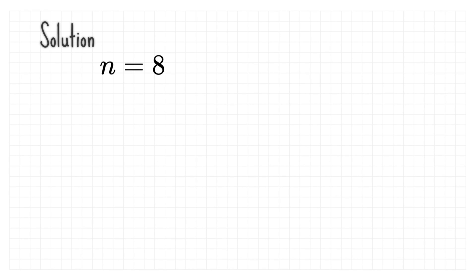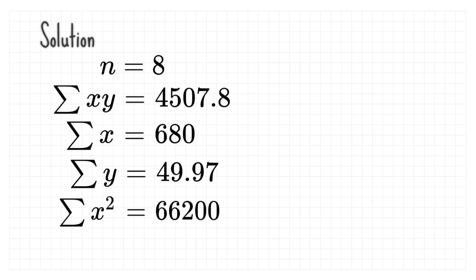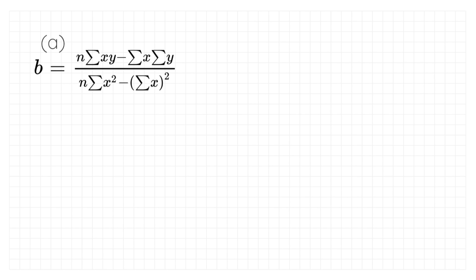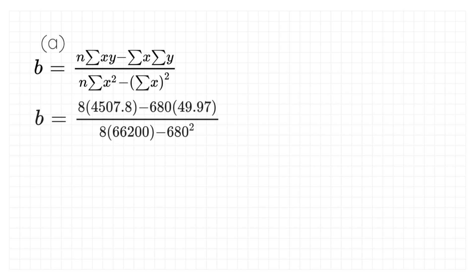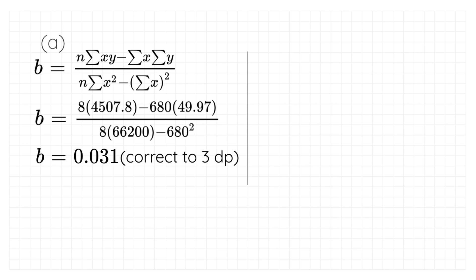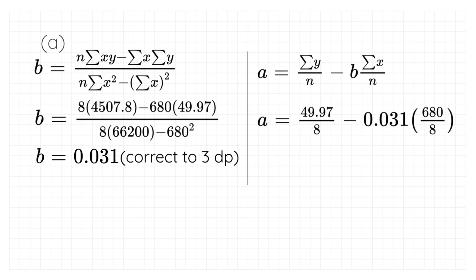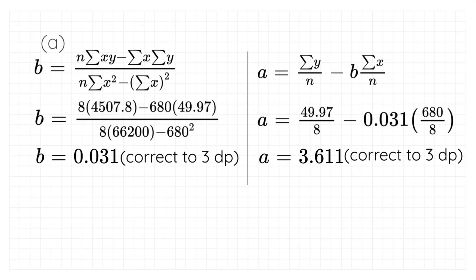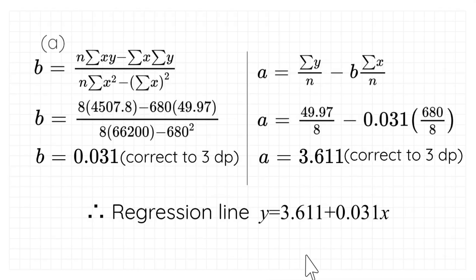Eight similar plots means n equals 8. Using your calculator, find all the summations. Substituting n and all the summations into the coefficient b formula, b equals 0.031 correct to three decimal places. Next, substituting the summation of y, coefficient b, summation of x, and n into the formula for a, we get a equals 3.611 correct to three decimal places. The regression line is y equals 3.611 plus 0.031x.